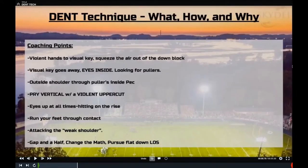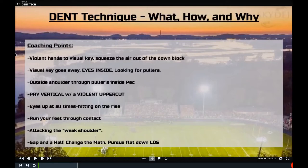Here are some of our coaching points. We want to get violent hands to our visual key and squeeze the air out of down blocks — we cannot run upfield and create a vertical seam. If that visual key goes away, whether it's a tackle or tight end, our eyes have to be inside looking for pullers. Once we've identified the puller, we want to attack that puller's inside pec with our outside shoulder. Once we make contact, we want to pry upfield, hit on the rise, run our feet, and look to attack inside of that puller to affect a second puller or make the actual tackle. We call that a gap and a half.